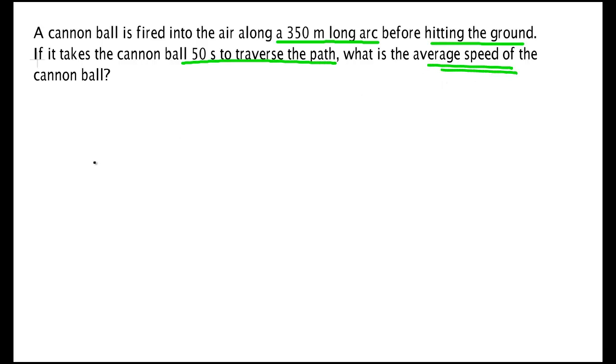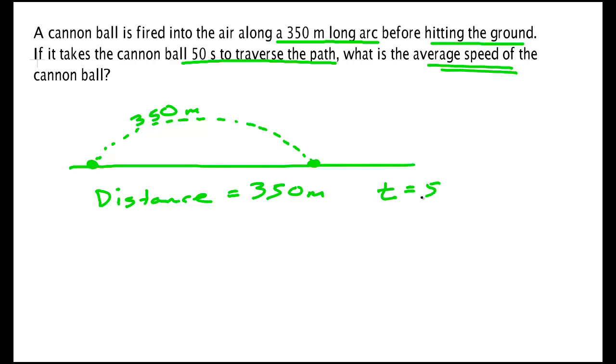So like any good problem, let's draw it. There's my cannonball. Cannonball goes through this path and hits here. We're told the distance along that path is 350 meters. That's what we know. We know distance. Let me write that down. Distance equals 350 meters. We know the time is 50 seconds.